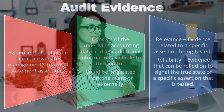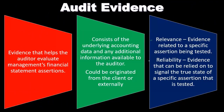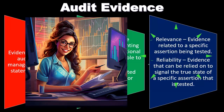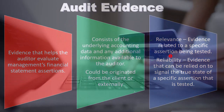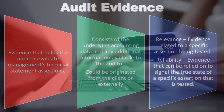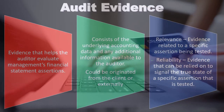Reliability means evidence that can be relied on to signal the true state of a specific assertion being tested. Some things are going to be more reliable than others. For example, did the information come from internal or external to the company? If we're testing cash and want a bank statement to confirm the balance, the company could provide one internally — but it could have been altered. It would be more valuable evidence if we got the bank statement directly from the bank, which is a procedure often done when testing cash.